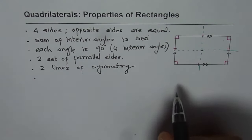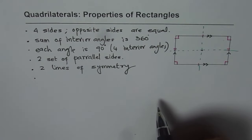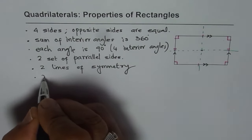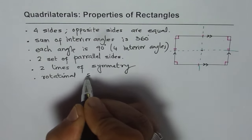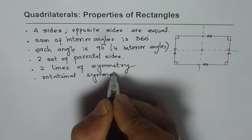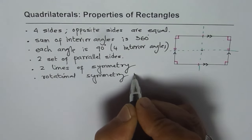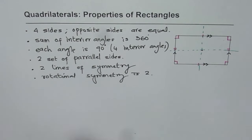180 degrees and 360 degrees, which will give you exactly the same rectangle. So we have rotational symmetry of 2.